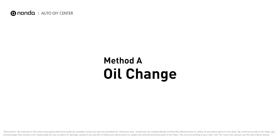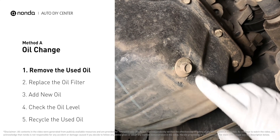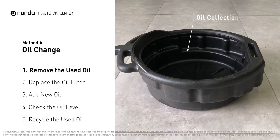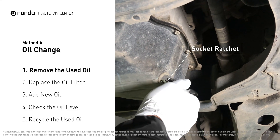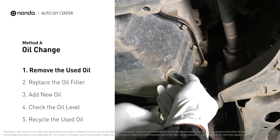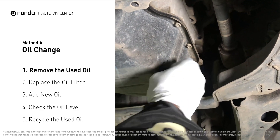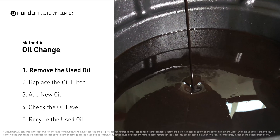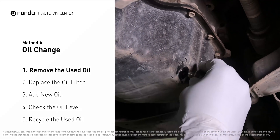Method A: Oil Change. Locate the oil drain plug on your vehicle and place an oil collection pan underneath it. Use a socket ratchet to remove the plug from the oil pan. Once the plug is removed, the oil should start flowing out into your collection pan. Once all the oil is drained, replace the drain plug and tighten it back on.